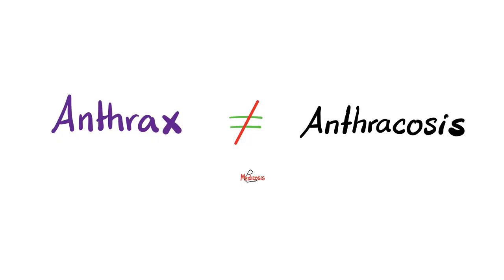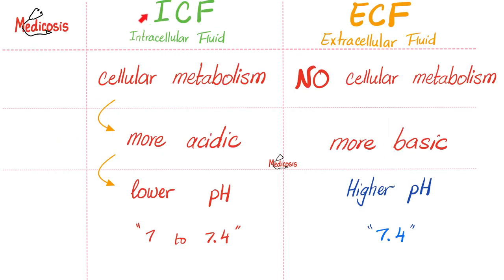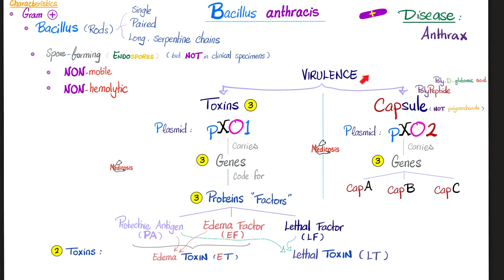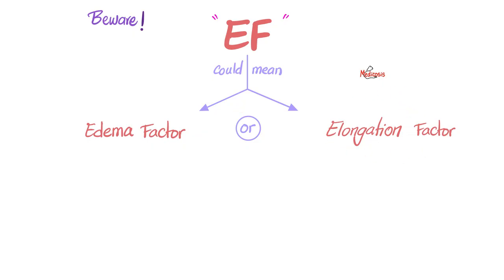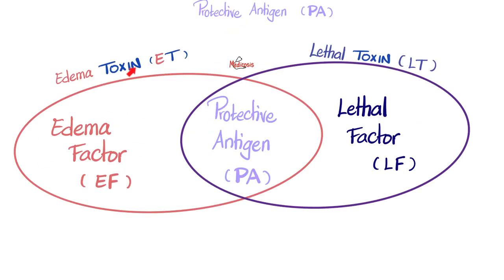Please do not confuse anthrax with anthracosis. The virulent factors of Bacillus anthracis are the toxins, which we talked about in previous videos, and the capsule. So we have three factors: protective antigen, edema factor, and lethal factor. Protective antigen plus edema factor will make edema toxin. Protective antigen plus lethal factor will make lethal toxin. So you have three factors, but two toxins. Do not confuse edema factor with elongation factor — both are abbreviated EF. Edema factor plus protective antigen equals edema toxin; protective antigen plus lethal factor equals lethal toxin.